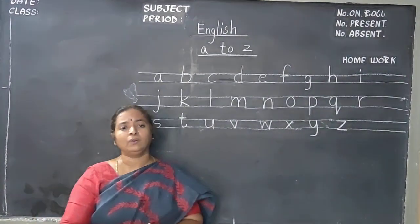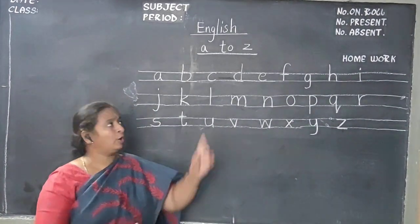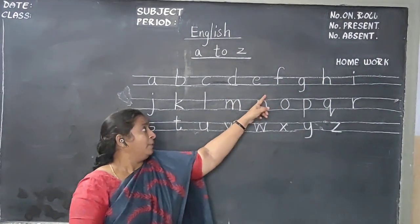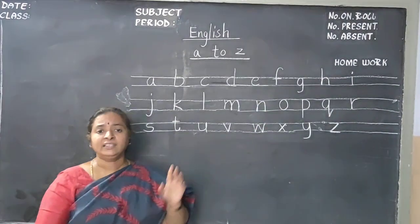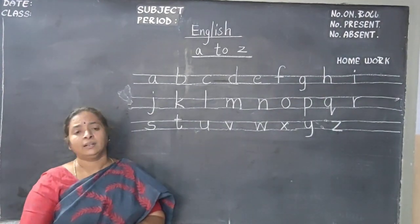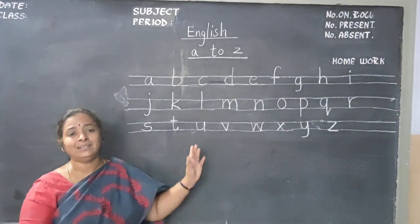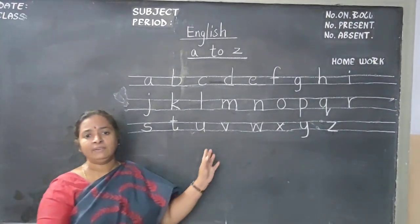I think previously you have learned A for apple, B for bat, C for dog, B for elephant, F for fan, G for goat. I think these all letters are, you can remind them, but now you should practice them. How? I will show you.